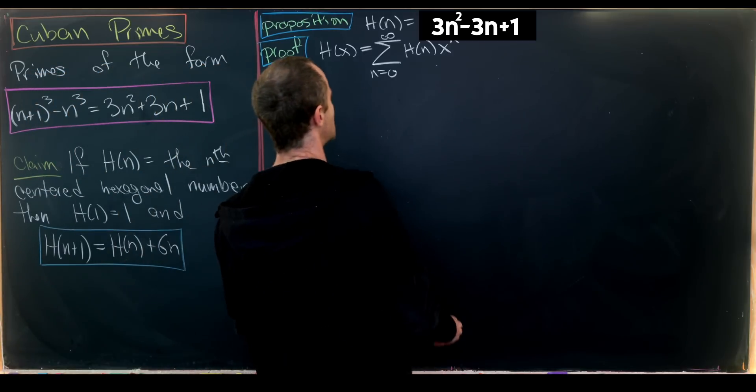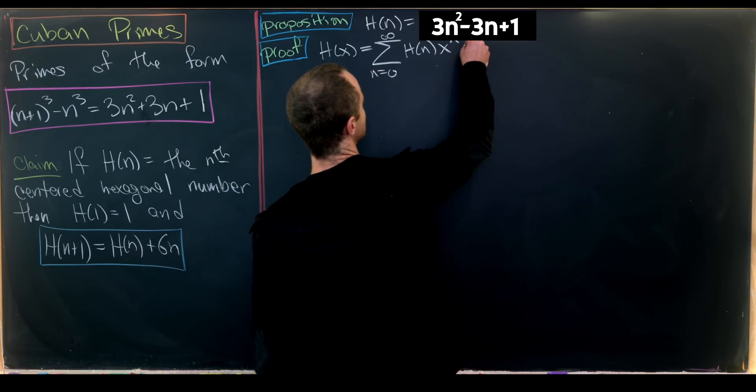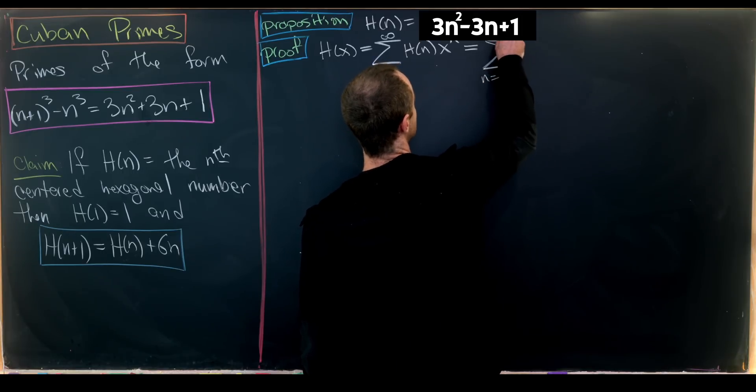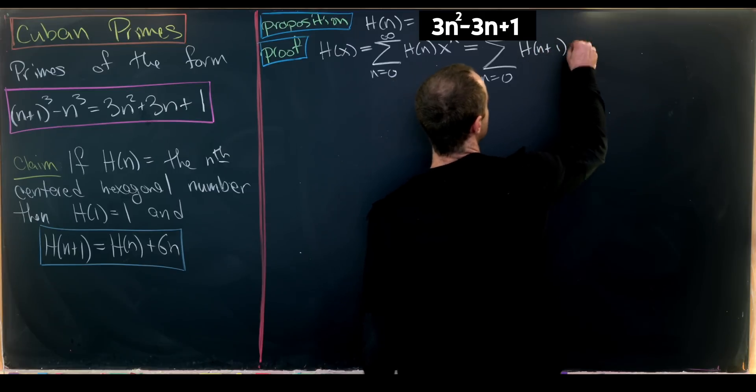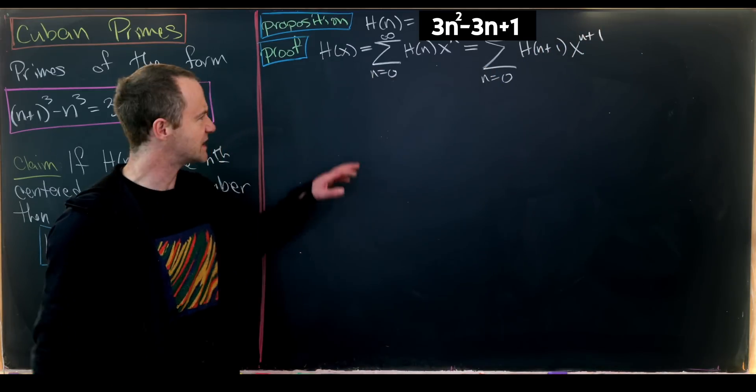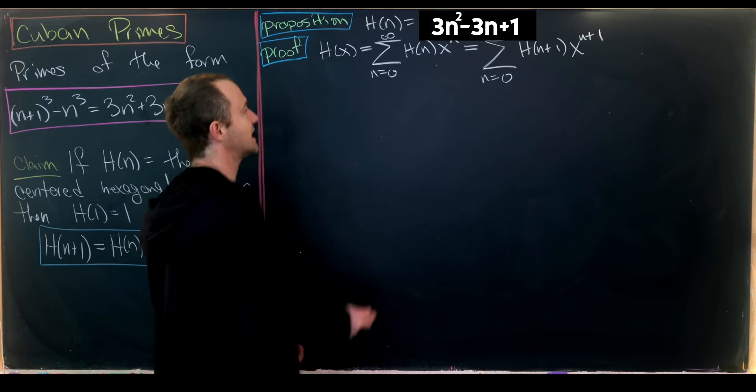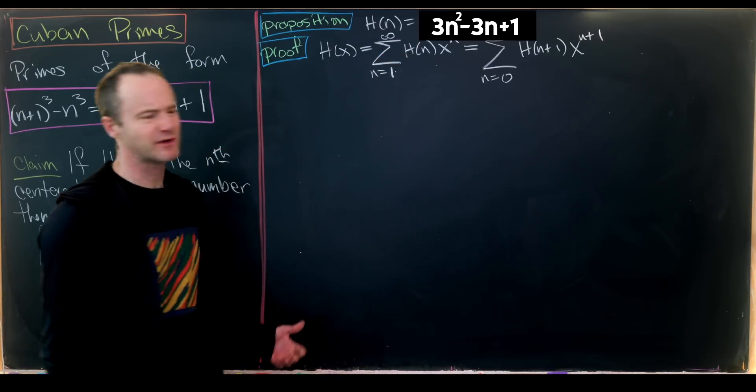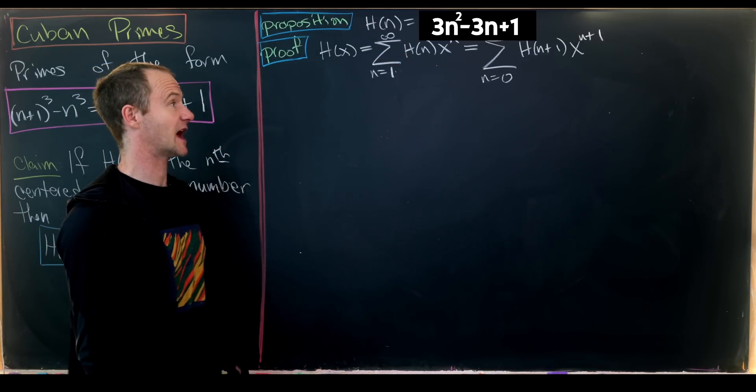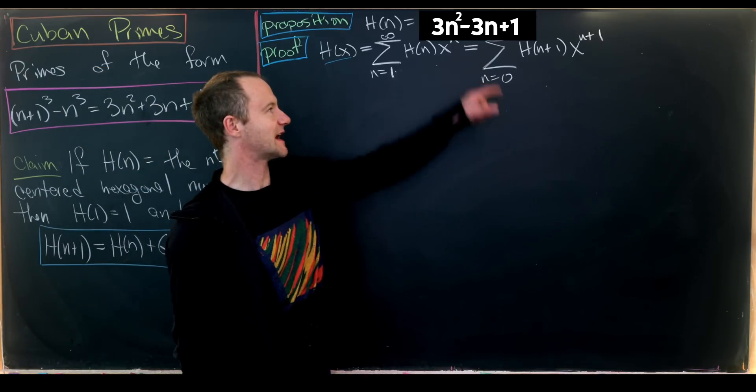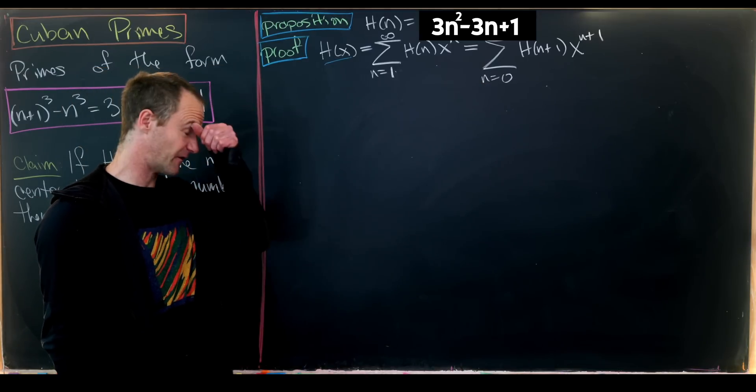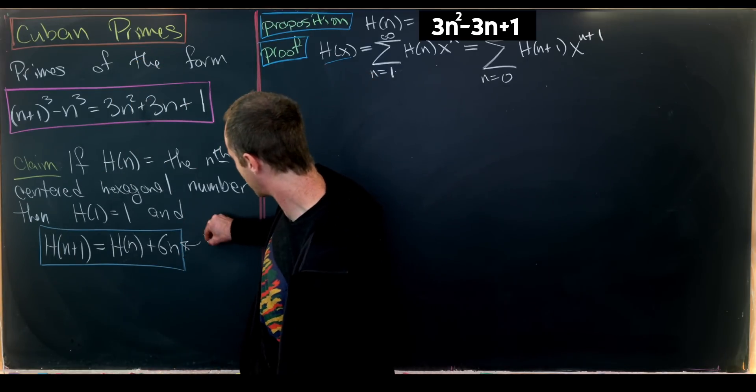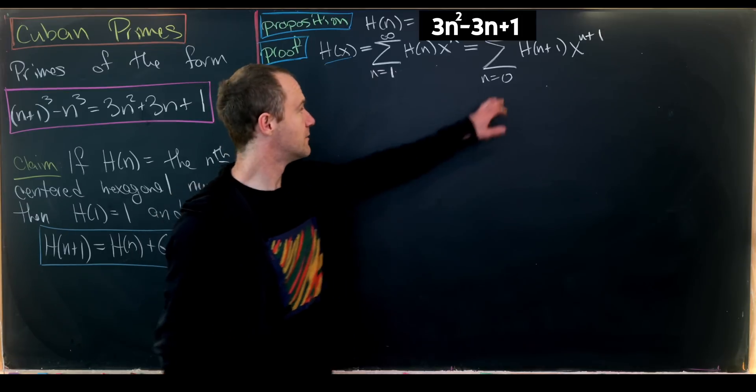Let's apply our recursion. First we re-index: we can rewrite this as Σ(n=0 to ∞) h(n+1)x^(n+1). We can do this without changing the lower bound since h(0) = 0. Now we pull out the first term because we can't apply the recursion to it.